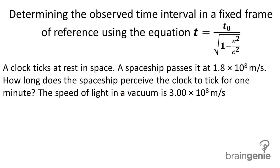Determining the observed time interval in a fixed frame of reference using the following equation. A clock ticks at rest in space. A spaceship passes it at 1.8 times 10 to the 8th meters per second. How long does the spaceship perceive the clock to tick for one minute? The speed of light in a vacuum is 3.00 times 10 to the 8th meters per second.